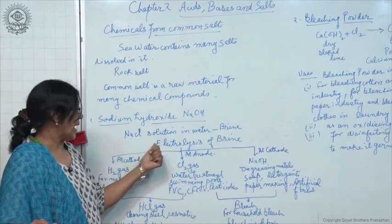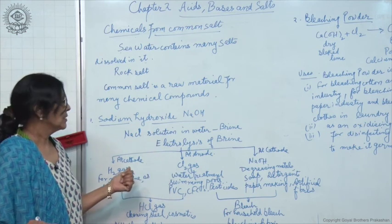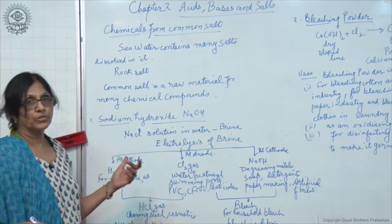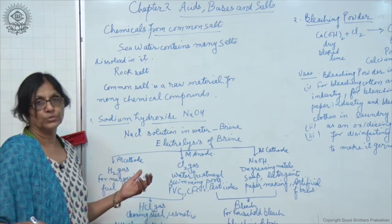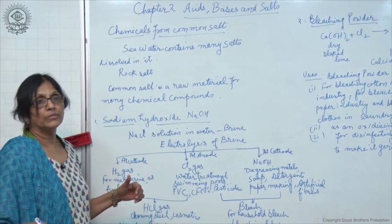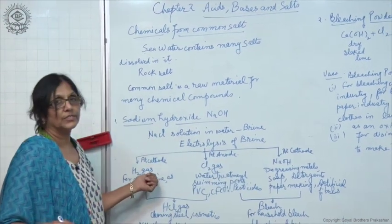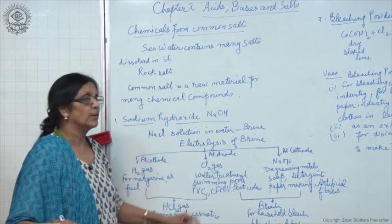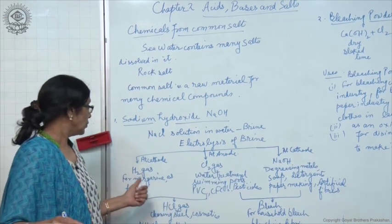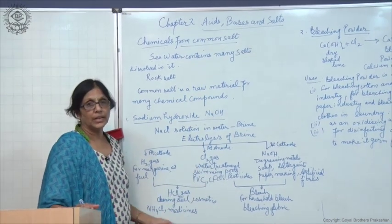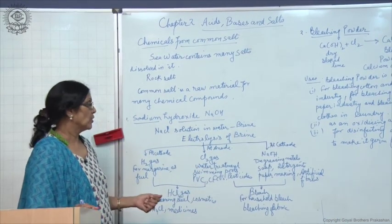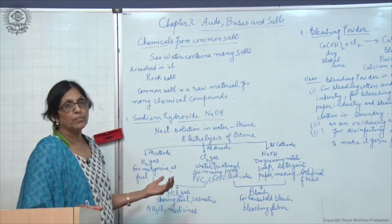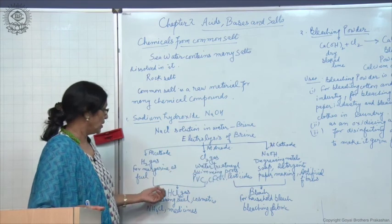When electrolysis of brine is done by passing electricity, it dissociates into sodium ions and chloride ions. Sodium ions are positively charged, so they will liberate at cathode where it combines with water and forms sodium hydroxide and hydrogen gas. Chloride ions are negatively charged, which will be liberated at anode and form chlorine gas. Three substances we get by electrolysis of aqueous solution of NaCl: hydrogen gas, chlorine gas, and NaOH.